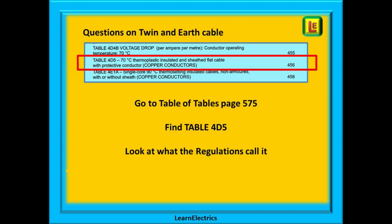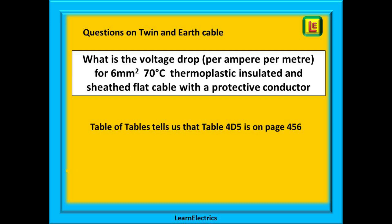Questions often come up on twin and earth cable. Look at page 575 and find table 4D5. Now look at what the regulations call twin and earth cable — they call it '70 degree centigrade thermoplastic insulated and sheathed flat cable with a protective conductor,' and it tells us the table is on page 456. A typical question might ask what is the voltage drop per ampere per metre for 6 millimetre 70 degree centigrade thermoplastic insulated and sheathed flat cable with a protective conductor. Table 4D5 on page 456 will tell us the answer.